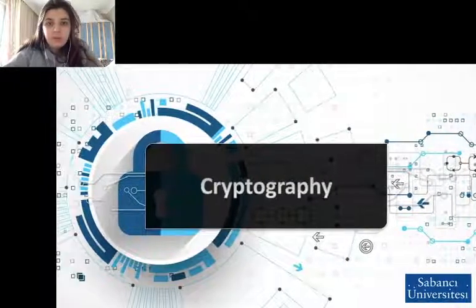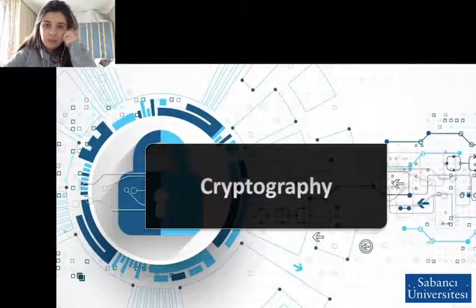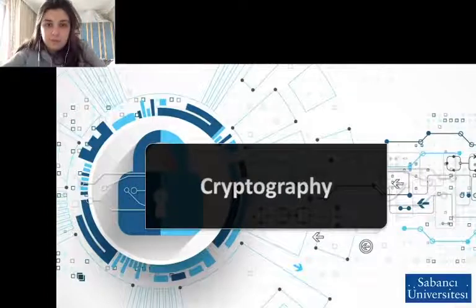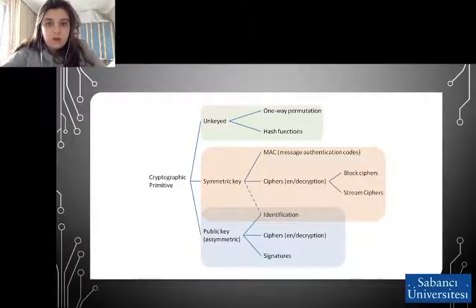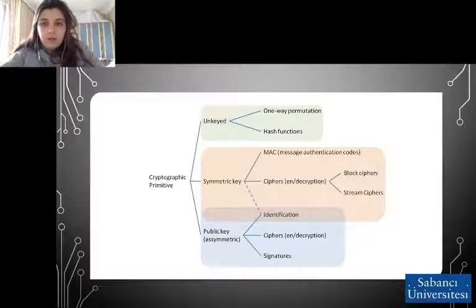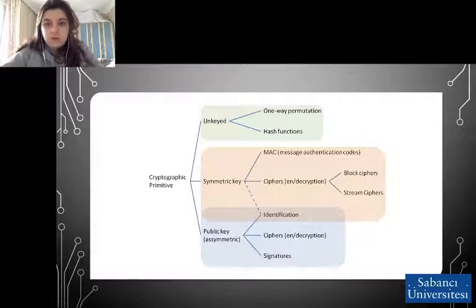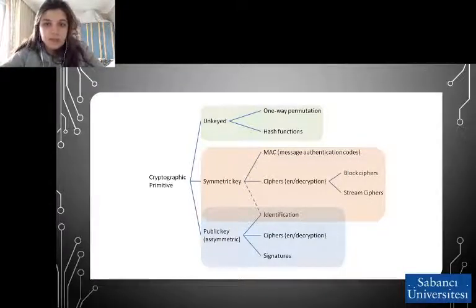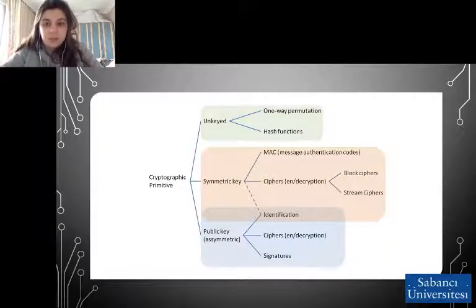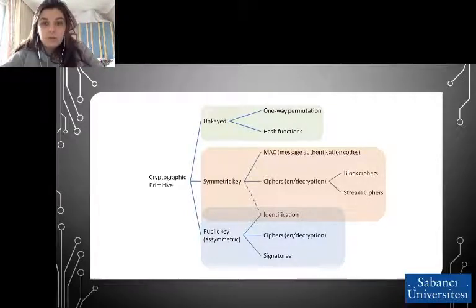First, let's talk about cryptography and its background. Cryptographic primitives are well-established low-level cryptographic algorithms that are frequently used to build cryptographic protocols for computer security systems. There are three categories under cryptographic primitives: unkeyed, symmetric key, and public key, also known as asymmetric key.